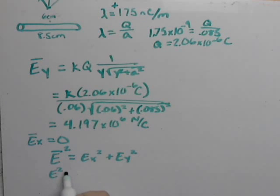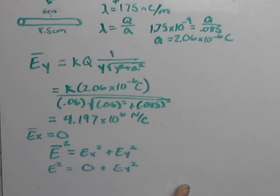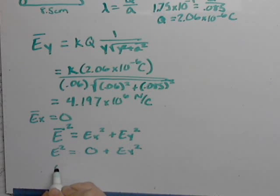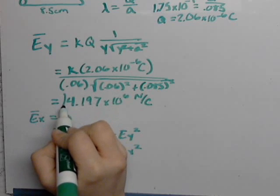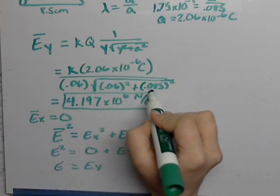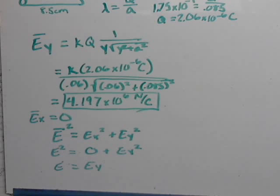So the total net electric field is going to equal the square root of Ex squared plus Ey squared. E squared equals 0 plus Ey squared. This implies E squared equals Ey squared. Take the square roots of both sides. E equals Ey. So our total electric field is this.